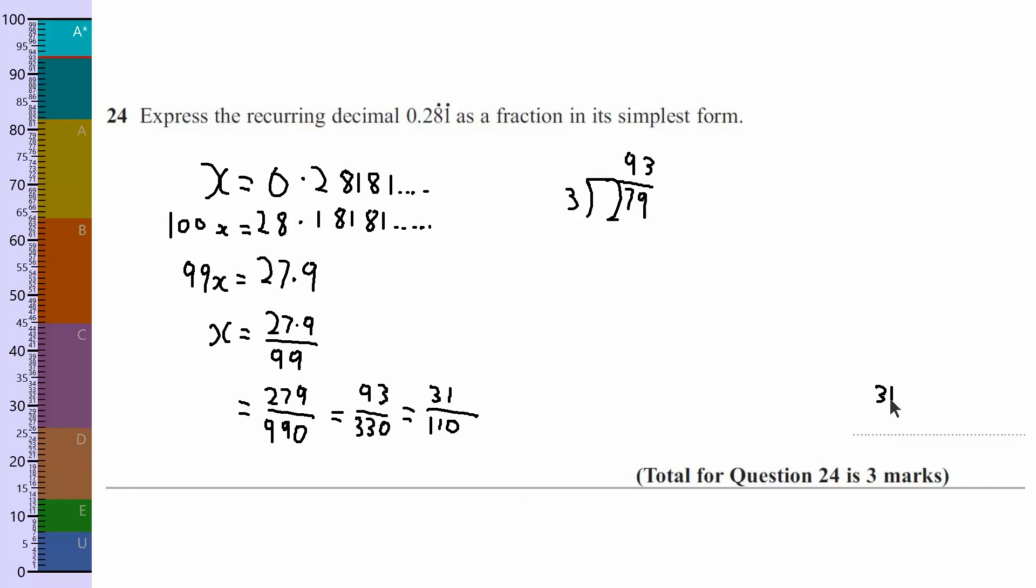Not the easiest one to simplify, but always check that it's not in the 3 times table if they're not both even. They're both even obviously, you want to halve them. And so the answer is 31 over 110.